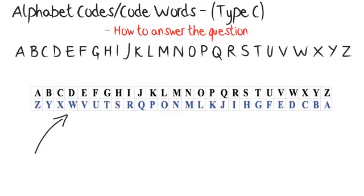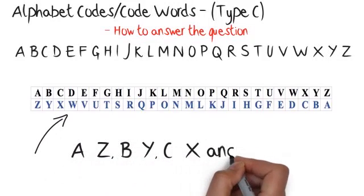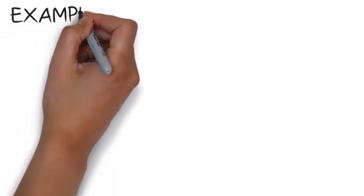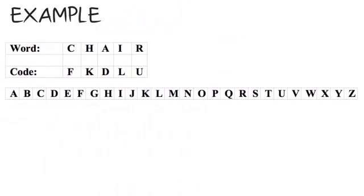Sometimes the pattern will be that the alphabet has been mirrored. The easiest way to solve this is to write the alphabet backwards underneath the normal alphabet. If you're struggling to find a code that works, it might be a mirror code. Try to remember: A=Z, B=Y, C=X, and D=W. If you see any of these combinations in your code, it is probably a mirror code.